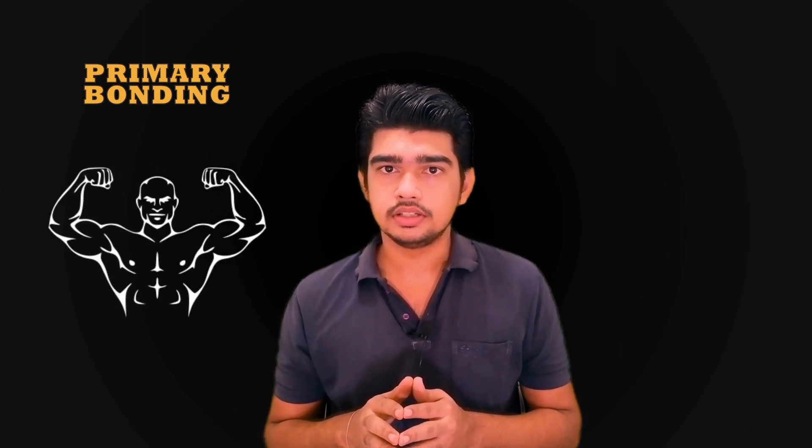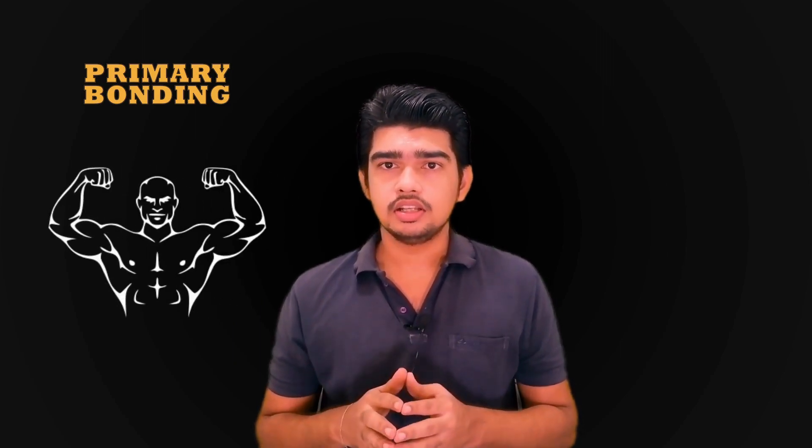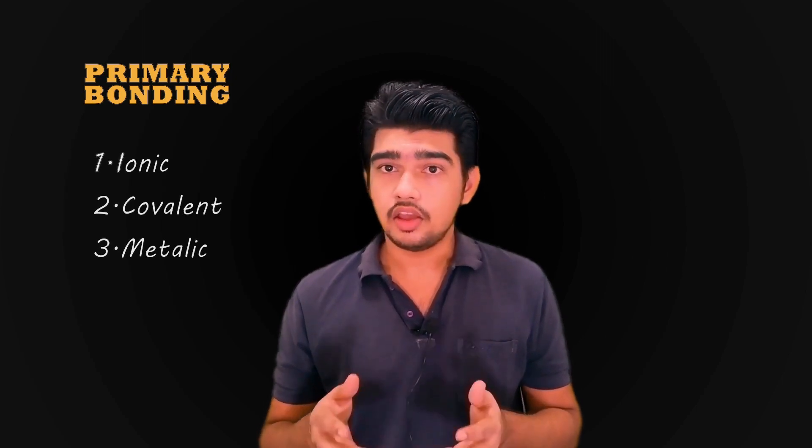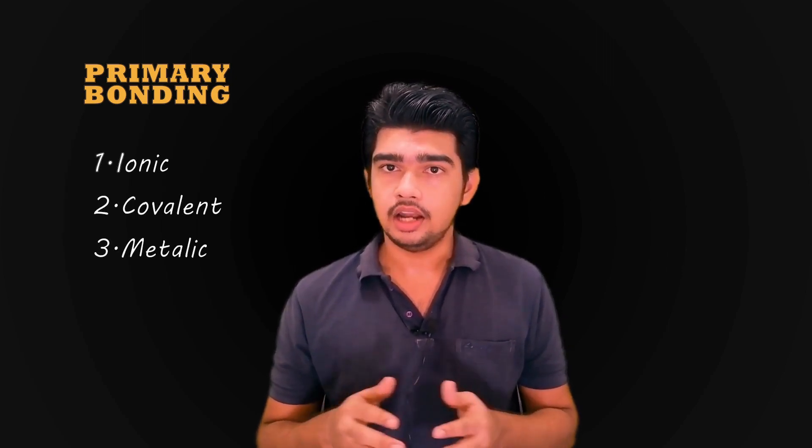First let us see about primary bonds. Primary bonds are much stronger than secondary bonds. Primary bonds are characterized by strong atom-to-atom attraction within a single molecule that involves the exchange of valence electrons. Primary bonds include ionic, covalent and metallic.